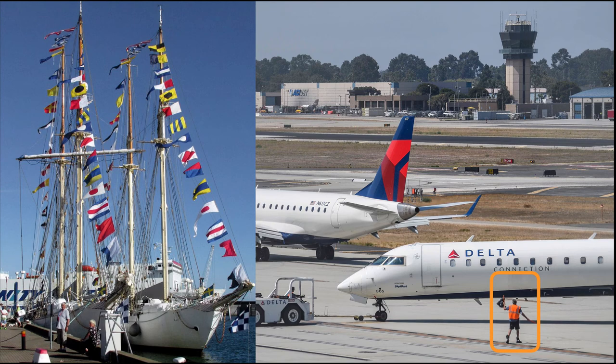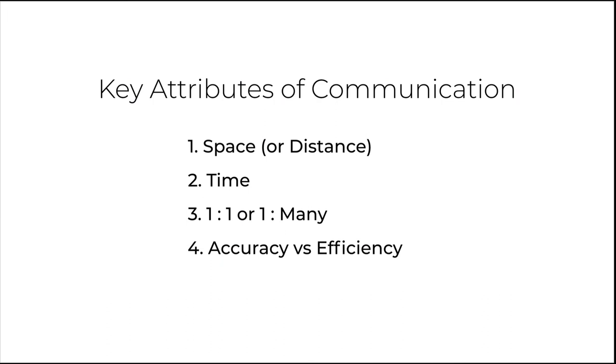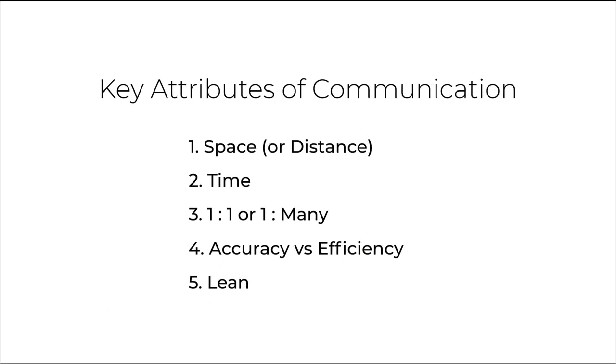This is also an example of line-of-sight communication, where the person transmitting and the person receiving the communication have to remain in each other's sight. The last attribute of communication we will look at is lean forward and lean back forms of communication.